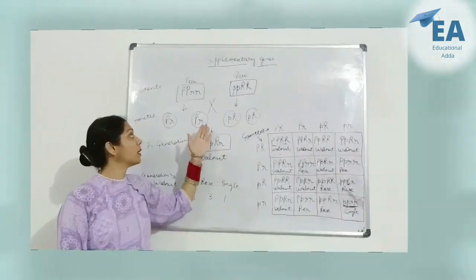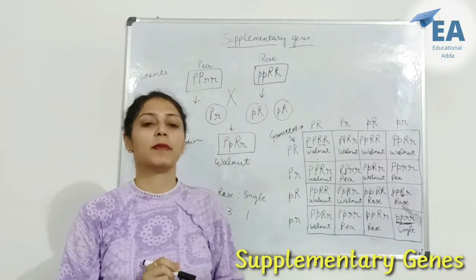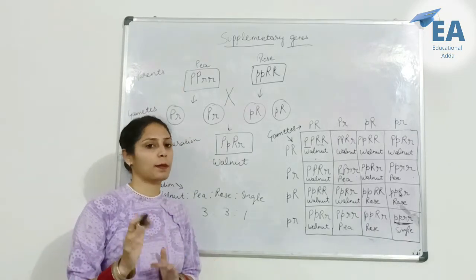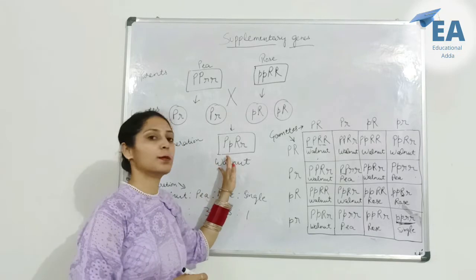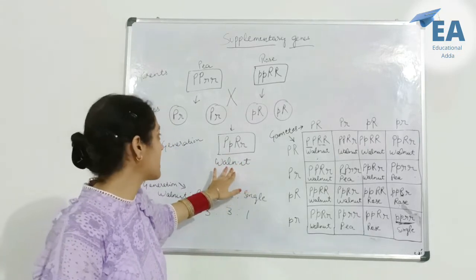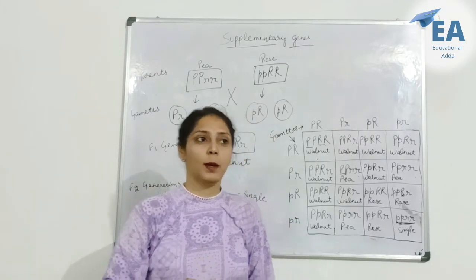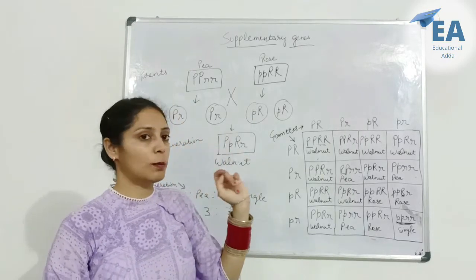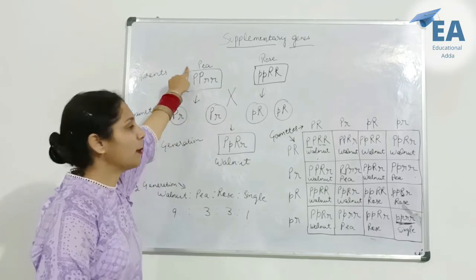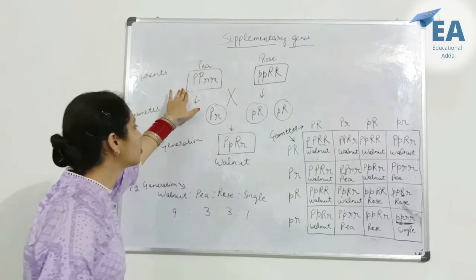Now let's discuss supplementary genes. When supplementary genes are present in dominant form, they produce a new trait. Let's take an example from poultry. Poultry has two types of comb: pea and rose. Capital P is for pea and capital R is for rose. These are the dominant genes.